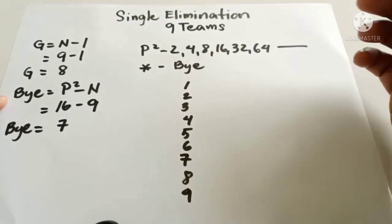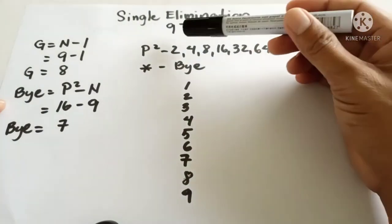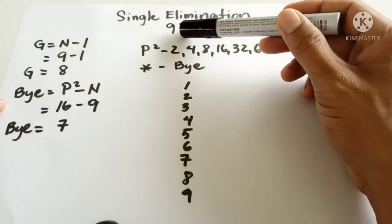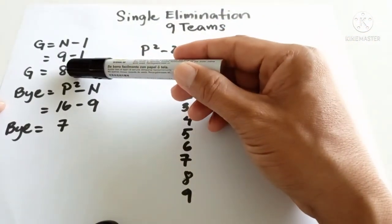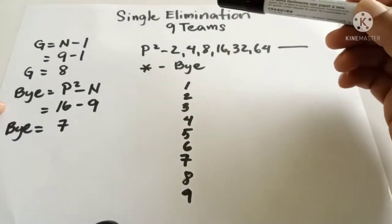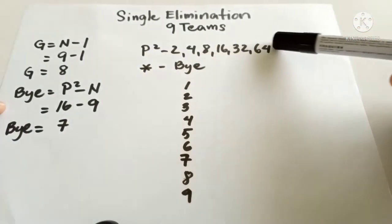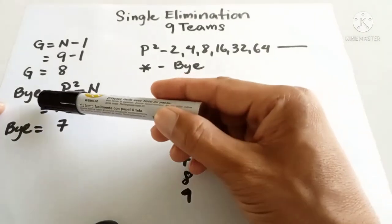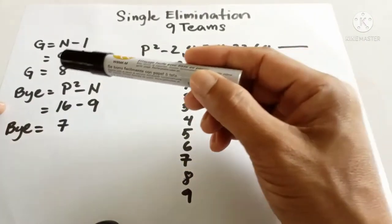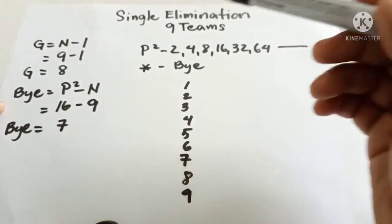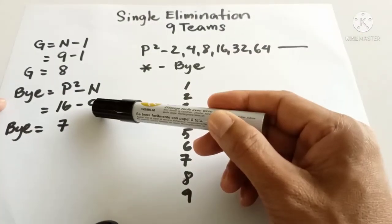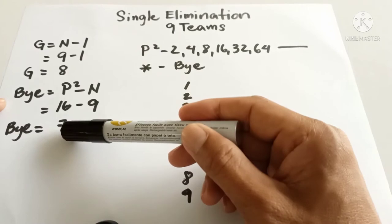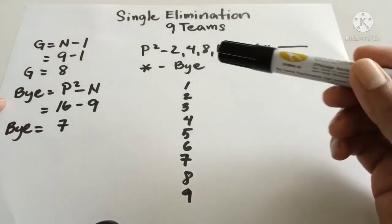This is single elimination for nine teams or nine number of entries. In nine teams we have eight games. Since nine is not included in the power of twos, we determine the bye using: bye equals the next higher power of two minus n. The next higher power of two to nine is sixteen, so sixteen minus nine equals seven, meaning we have seven byes.